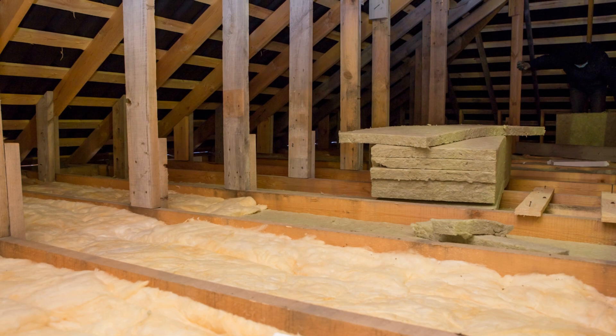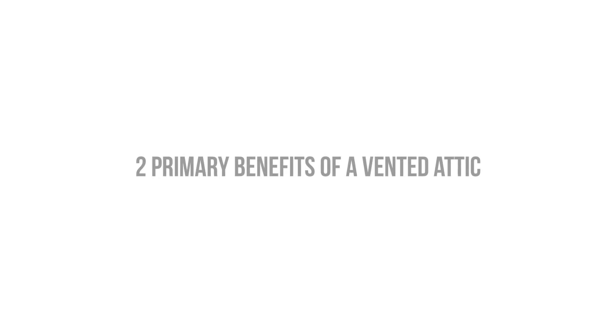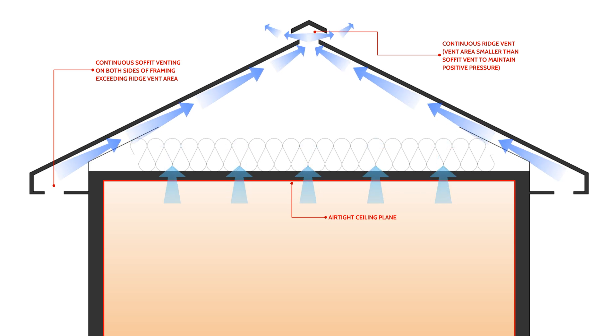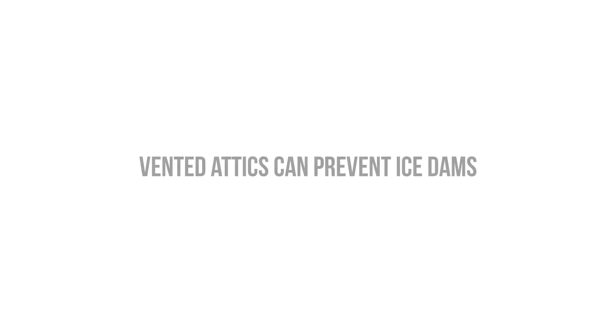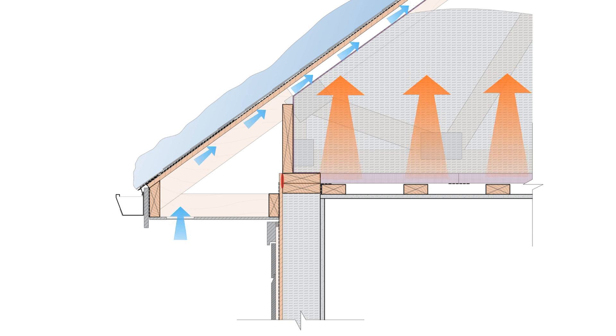This type of attic can be made to work in many different climates, as long as we're locating our ductwork within the conditioned space on the interior and air sealing the ceiling. There are two main benefits to a vented attic. The first is that we can get rid of any moisture that diffuses through the ceiling, as it's carried away by the constant flow of air. The second benefit is ice dam prevention — we're able to uncouple the roof sheathing and the roof covering from the heat loss of the building by flushing the attic with cold outside air.